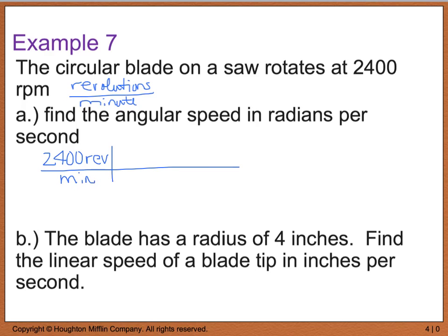Now, part A says to find the angular speed in radians per second. So, the first thing I can do is I can get my unit of time gone. And I know that I have one minute for every 60 seconds. So, what's going to happen here is my minutes are going to cancel. So, now I have revolutions per second.